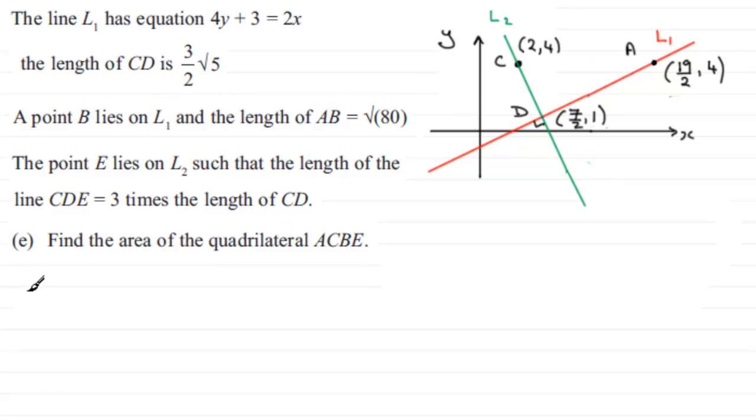Let me just put it down here: AB equals root 80. Root 80 is exactly the same as the square root of 16 times 5, and that can be taken as the square root of 16, which we know is 4, and then we've got just root 5. So 4 root 5 then for the distance AB.